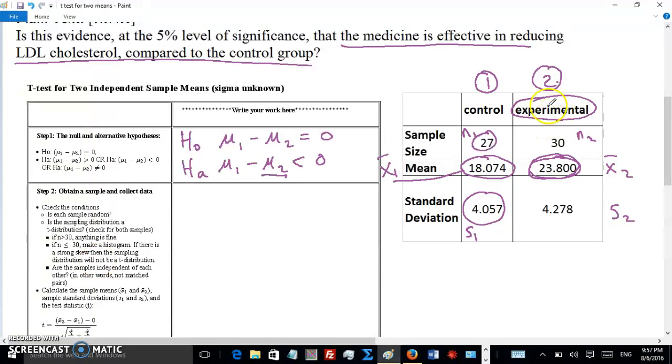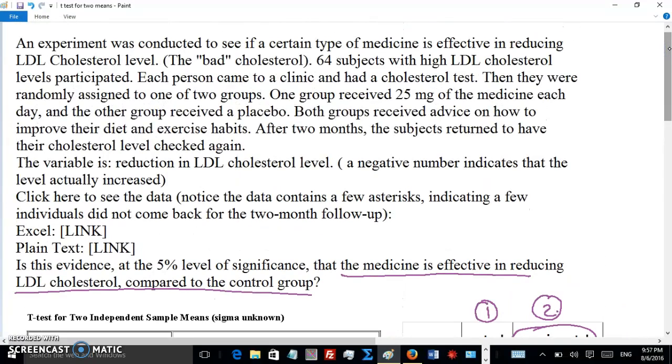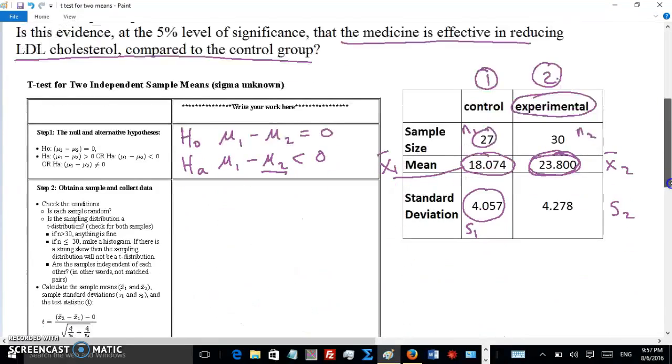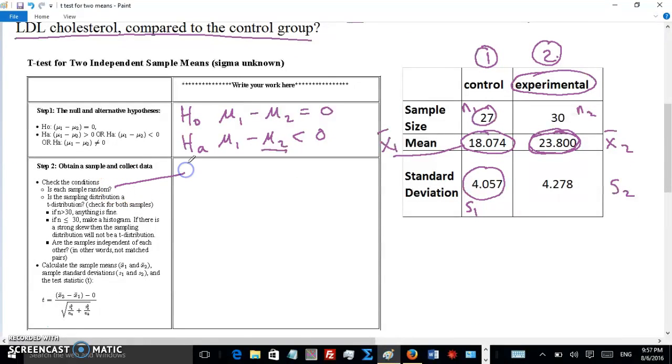Step two: I get the sample, collect the data. Okay, I got the data, I got the summary statistics right here. I just did that in advance to save some time. But is the sample random? Well, let's go back to the text of the question. It says here that they were randomly assigned to the two groups. So that's good. Now the subjects themselves may not have been randomly selected, but at least they've been randomly assigned. So I'll go ahead and say the sample random—I'll say at least there's random assignment to the two groups. Now is the sampling distribution a t-distribution? If n is more than 30... Well, n is not. And n is 30 with one group, it's almost 30 for the other group, so we have some leeway here. Let's take a look at the histograms. I made the histograms in advance.